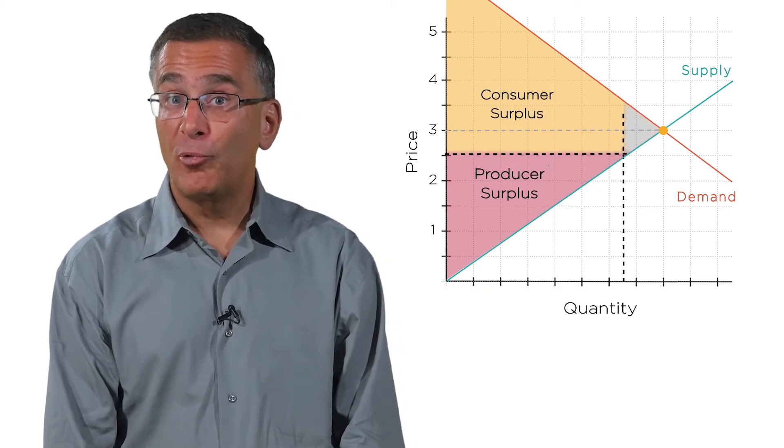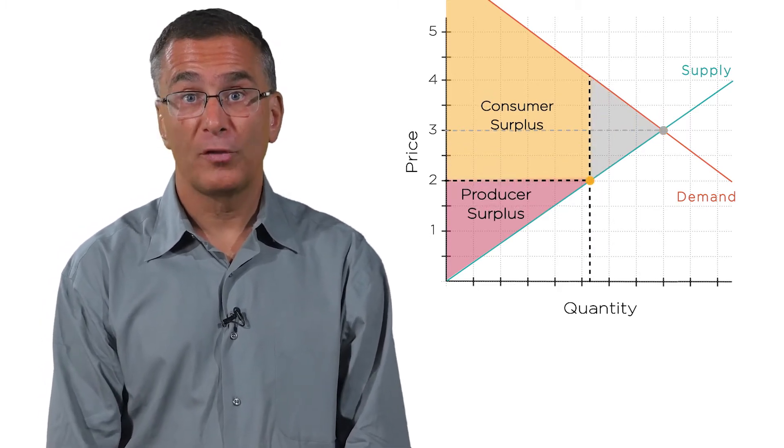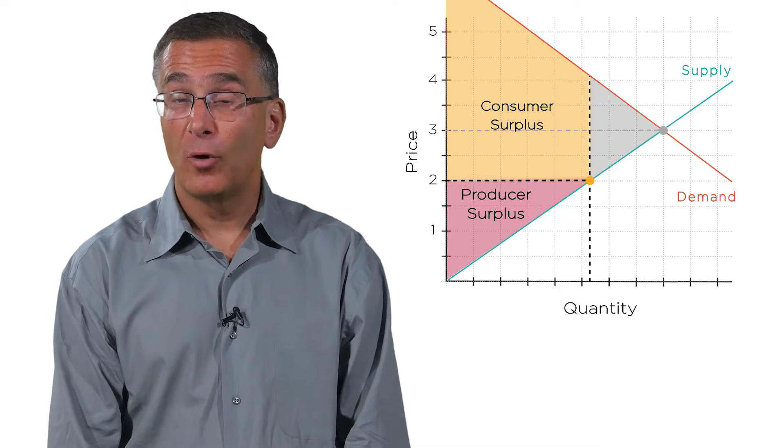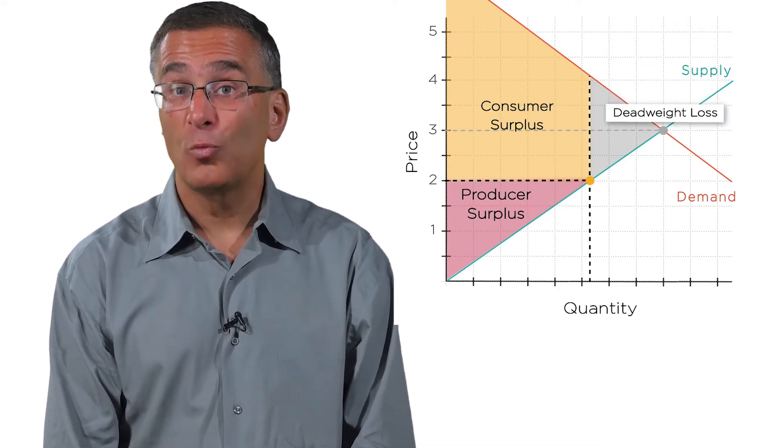When the government tries to force the price to be lower than the equilibrium price, the total amount of social surplus falls. You might have consumers better off or producers better off, but when you add up everybody's surplus, society's worse off than before.